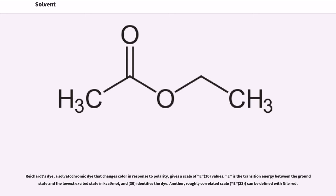Another, roughly correlated scale, ET(33), can be defined with nile red.